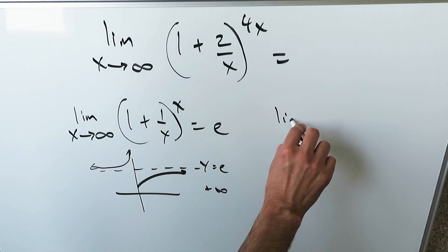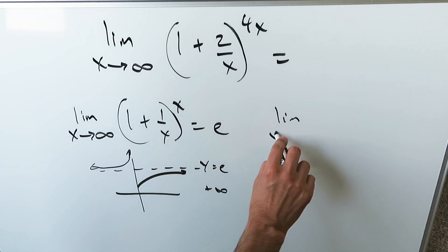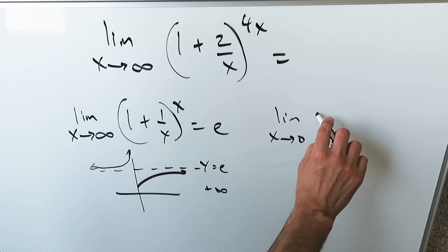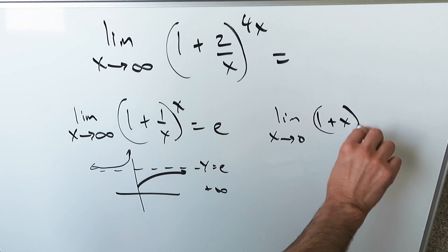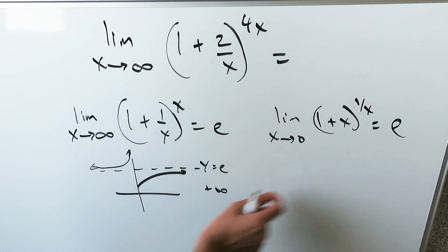There's another limit which also gives you e, but it's not relevant to this example. Limit as x approaches 0, you have 1 plus x to the power of 1 over x. If you evaluate this, you will also get e.